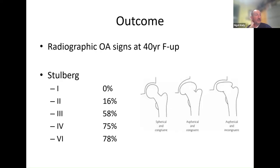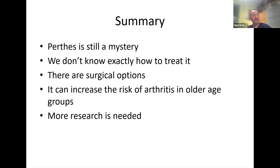Coming back to the classification system — what's your chance of getting arthritis? If you end up with a nice round hip and round socket, it's pretty low. The more the shape is affected, the higher the chance of arthritis at 40 years — the worst cases have about a 75% chance of arthritis at 40 years with a badly shaped hip, so it's almost inevitable. Perthes is still a mystery — we don't have all the answers, don't exactly know how to treat it or why it happens. There are surgical options indicated for some children, but it's always a difficult debate. It is a lifelong condition, and we certainly do need more research to work out the best treatment options.